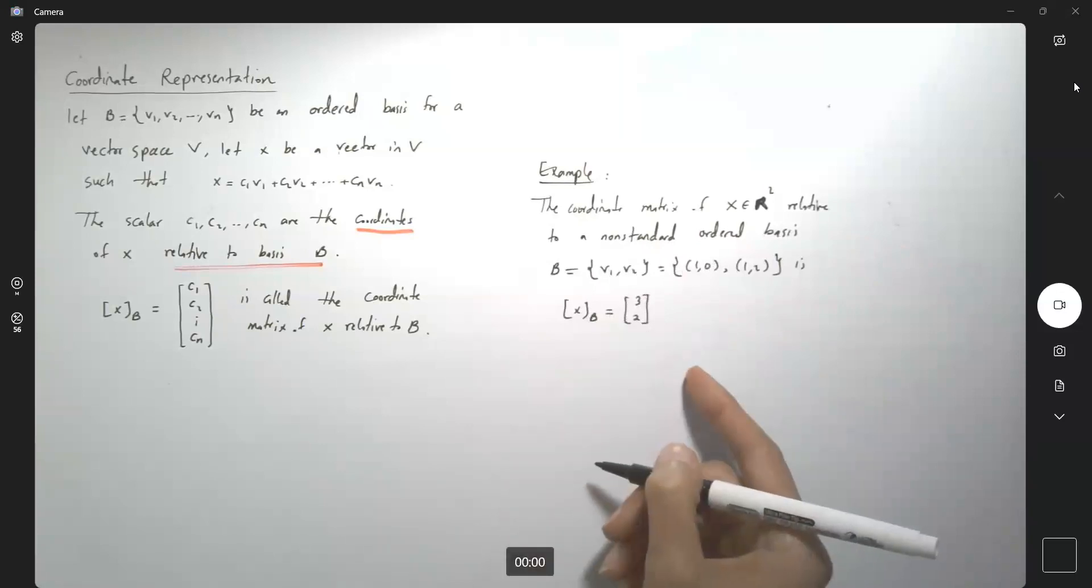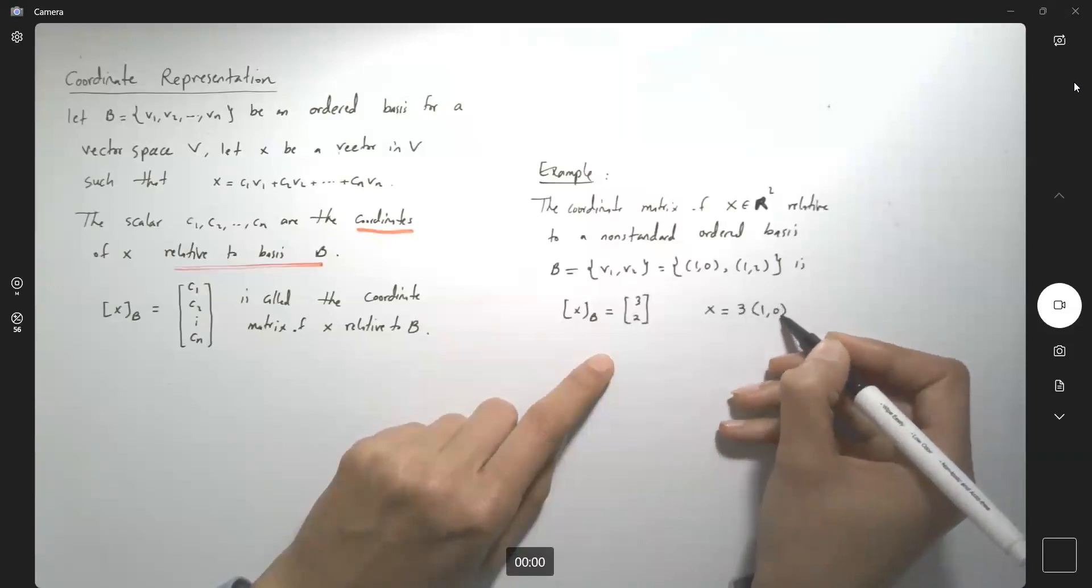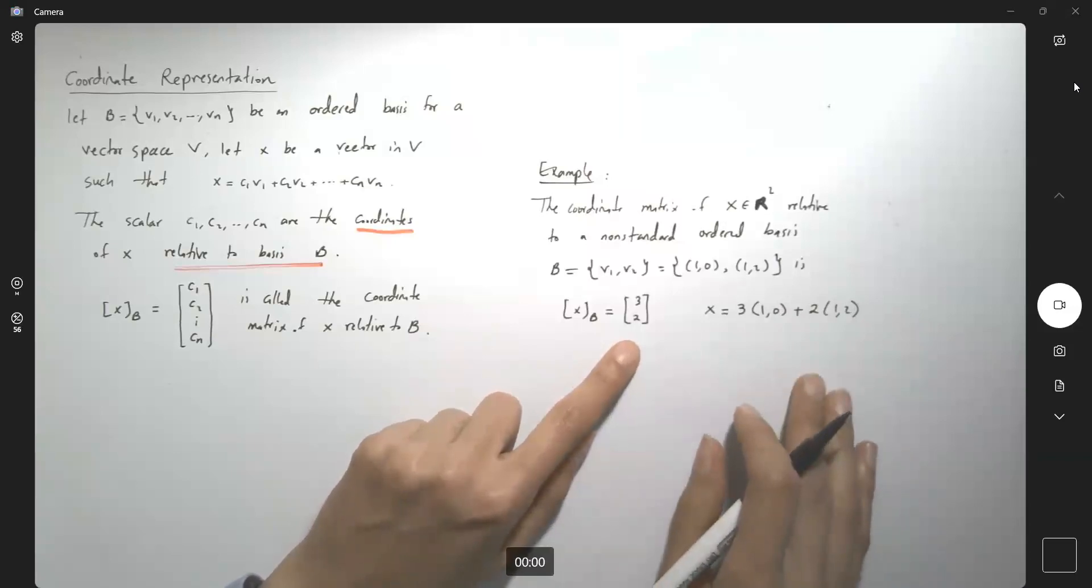What's the meaning of that? It means that vector x can be written as 3 times (1,0) plus 2 times (1,2). So let's state the question.